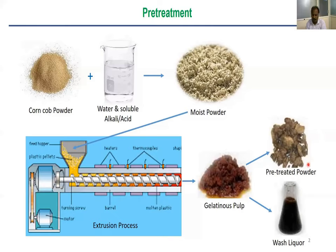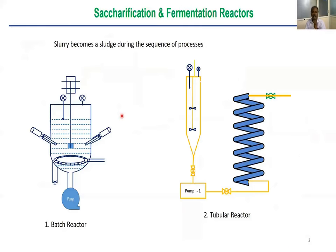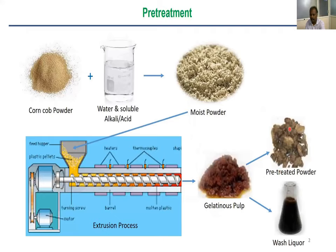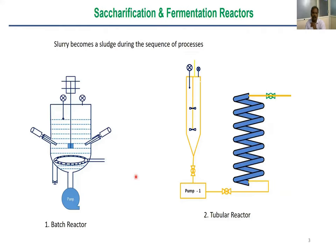The next step involves saccharification and fermentation. In a batch reactor, the pre-treated powder must be mixed with water again. We dilute it because the enzymatic process requires enzymes to reach the cellulose molecules — in a solid state this cannot happen effectively.